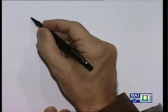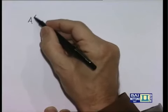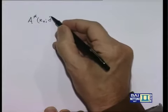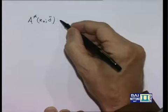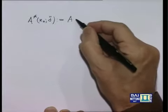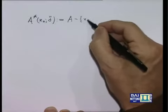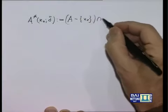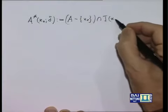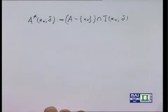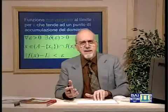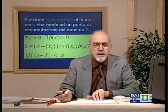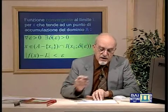Torniamo sul foglio. Può essere conveniente, anche se non strettamente necessario, introdurre un'abbreviazione per questo insieme abbastanza elaborato. Potremmo chiamare A* (x₀, delta) proprio l'intersezione tra A privato di x₀ e l'intorno di centro x₀ e raggio delta. È una notazione non standard, ma è utilizzata anche nel testo di riferimento.